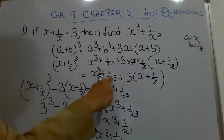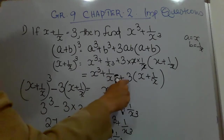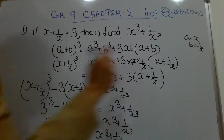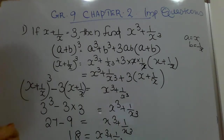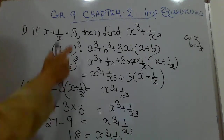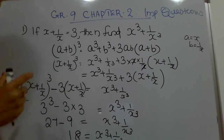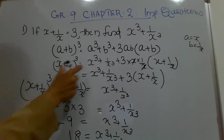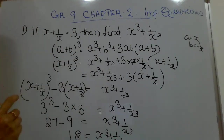To recap: we expanded (x + 1/x)³ = x³ + 1/x³ + 3 × x × (1/x) × (x + 1/x), then substituted the given value on both the left and right sides.